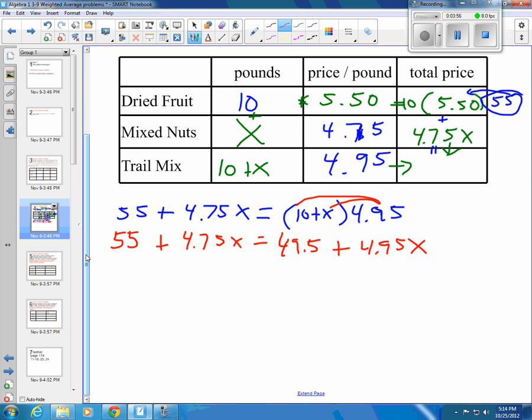Then you want to get all your variables on the same side of the equal sign. I am going to move the smaller coefficient. 4.75 is smaller than 4.95, so I'm going to move the 4.75. It is a positive 4.75X. The opposite of positive is negative, so I subtract 4.75X from both sides. That cancels out my 4.75 or makes that to a 0.